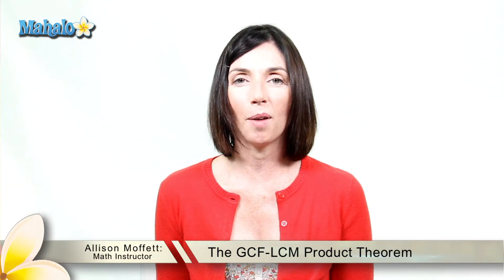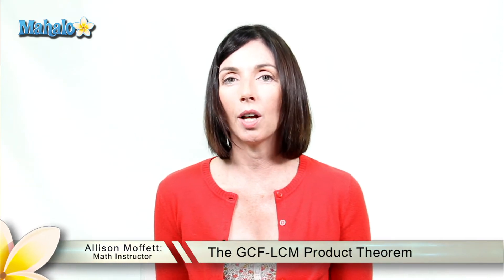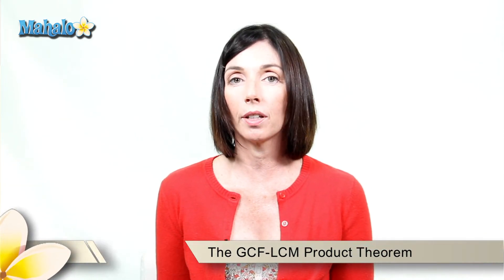Hi, it's Alison from Mahalo.com. I want to show you an example of using a theorem to find the greatest common factor or least common multiple of two numbers. There's a theorem that says the greatest common factor times the least common multiple is equal to the product of the numbers itself. So we're going to use that and see what we can find out.